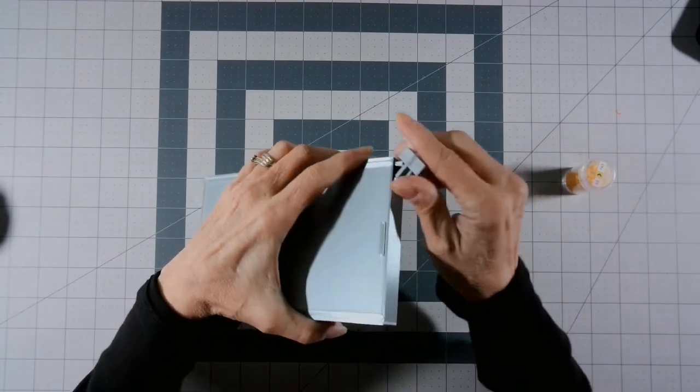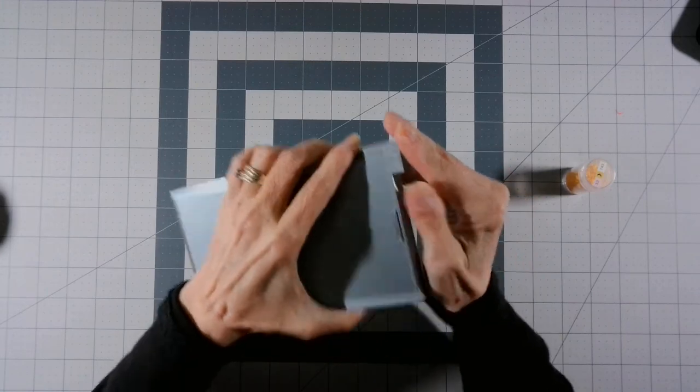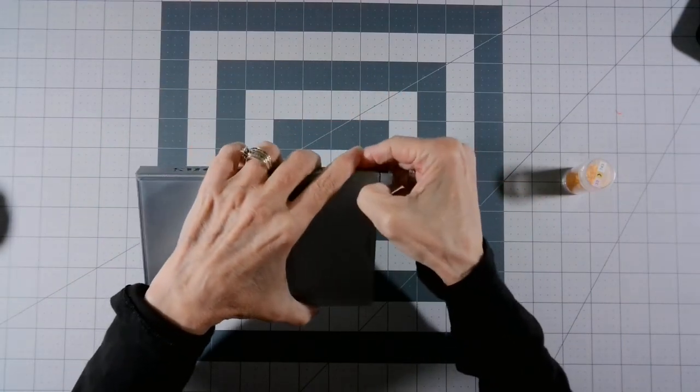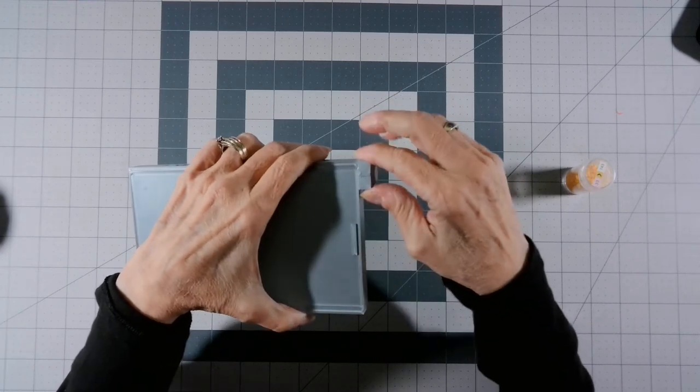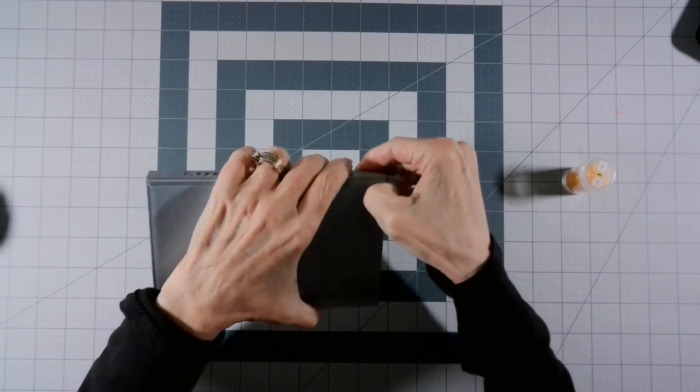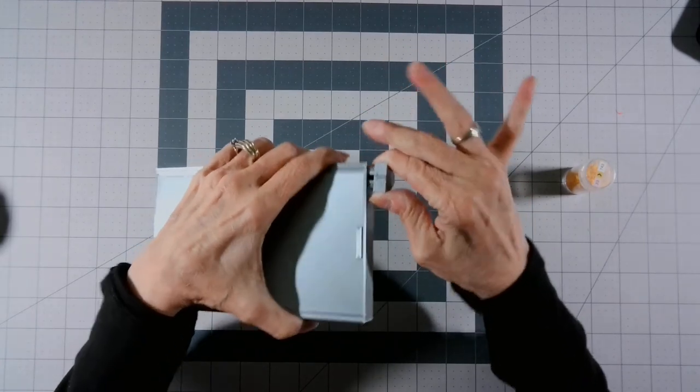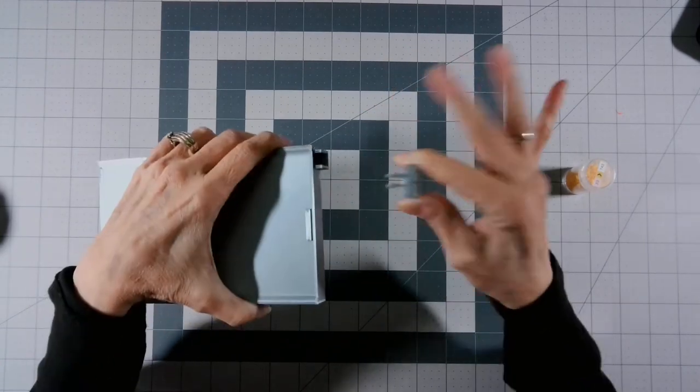Alright, I'm gonna show you again. Take your thumbnail, put it right here in between the plug and the lid, and you can pop it off. Grab both sides, wiggle, and pull it out.